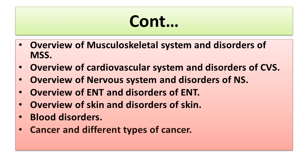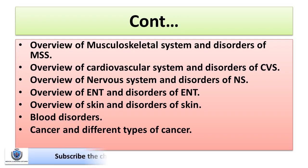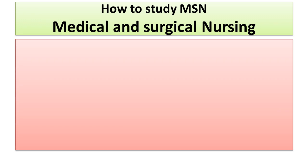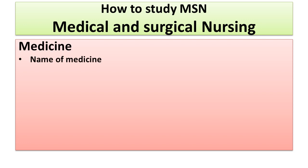We will also discuss the overview of skin and disorders of skin, blood and blood disorders, and lastly cancer and different types of cancer. A common question which arises among nursing students is how to study MSN. As you know, the name of this subject is medical and surgical nursing — so medical is related to medicine, and to learn about any medicine you have to remember the name of that medicine.